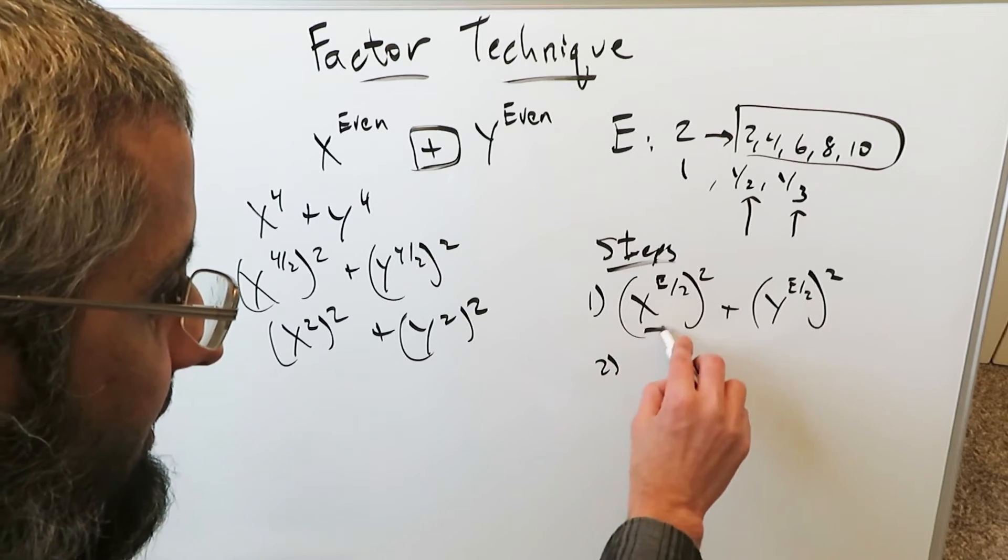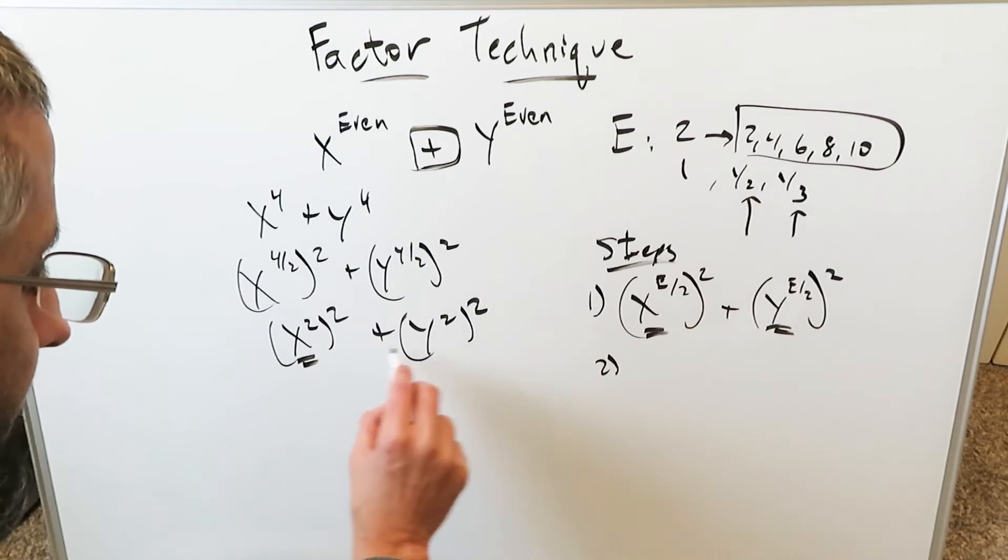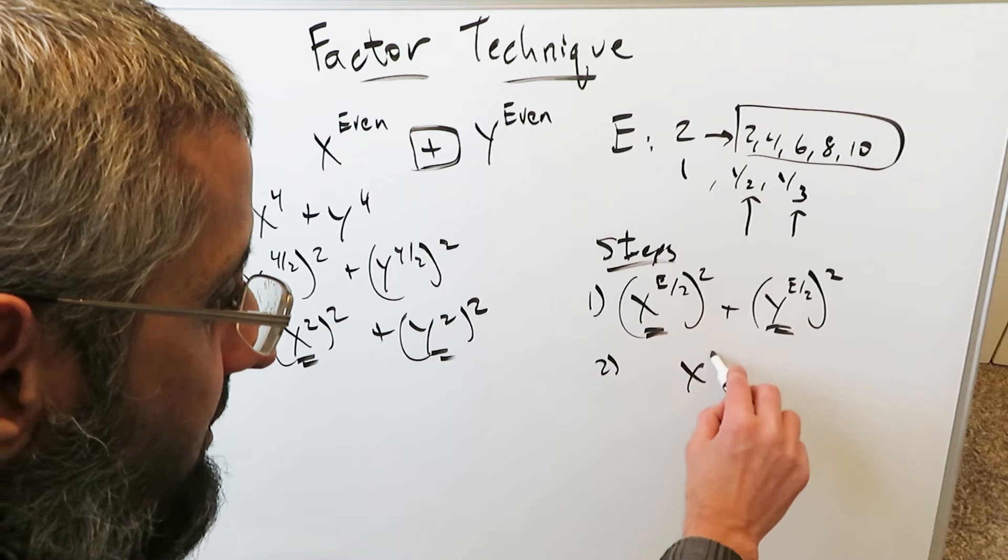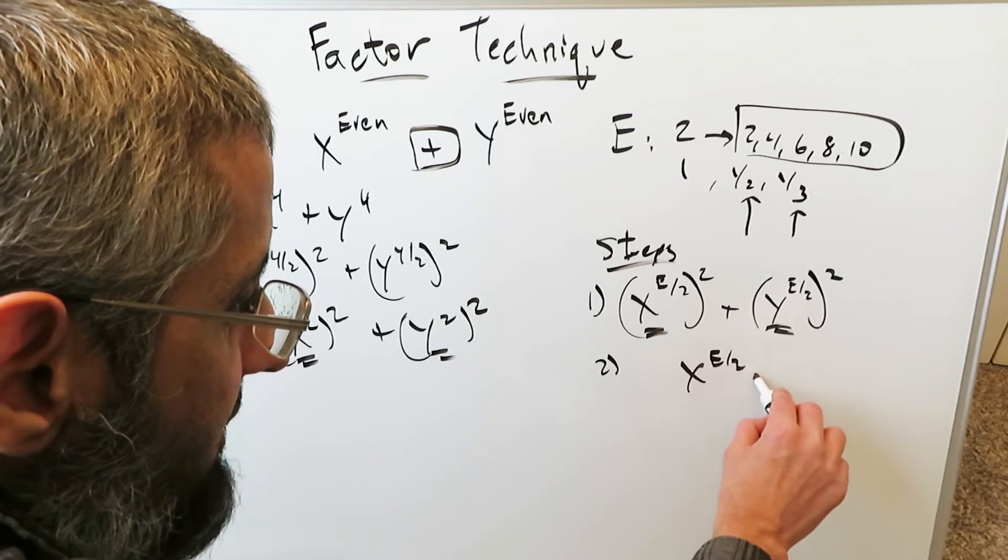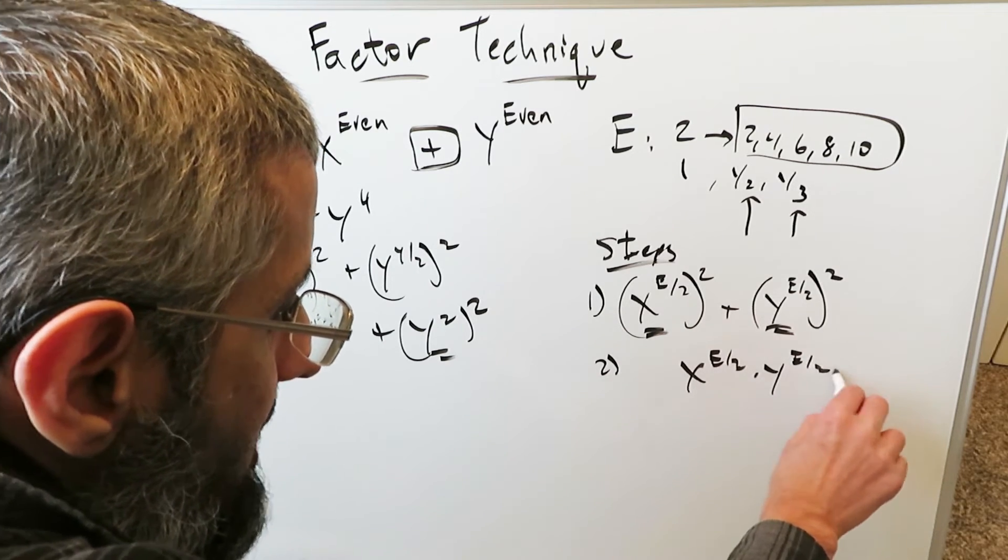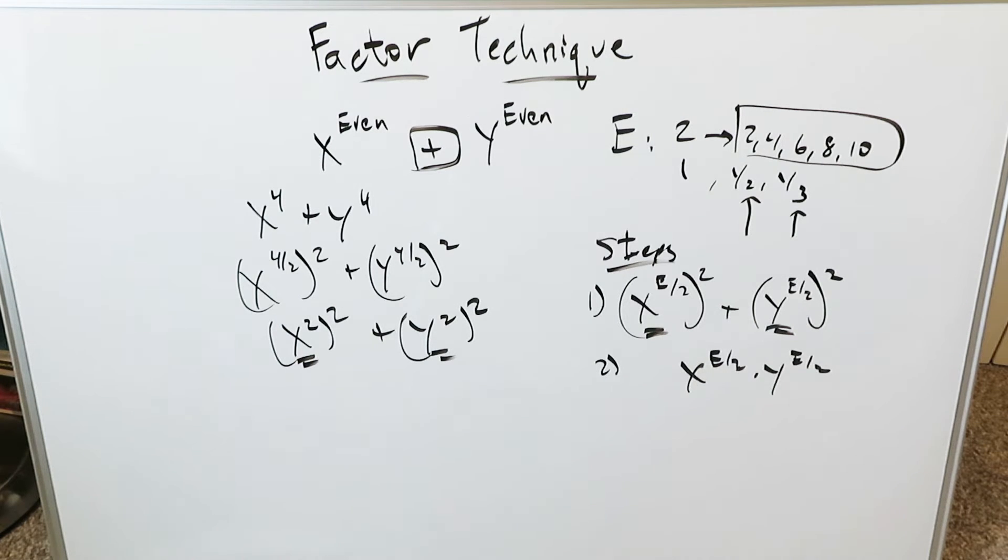Step number 2, you look at these internal items right here. These are my internal items. You put them in a product relationship. You multiply x to the power of e over 2 times y to the power of e over 2. Again, the reason behind this will become evident soon. What are my internal items in a product? x squared, y squared.